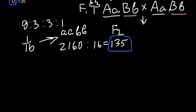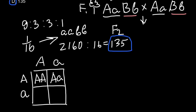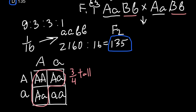So for example, for one parent who is heterozygous, when we build a Punnett square we can see all the phenotypes in the progeny: capital A capital A, capital A small a, and capital A small a. As you can see, three-quarters of the progeny would be tall and one quarter would be short.